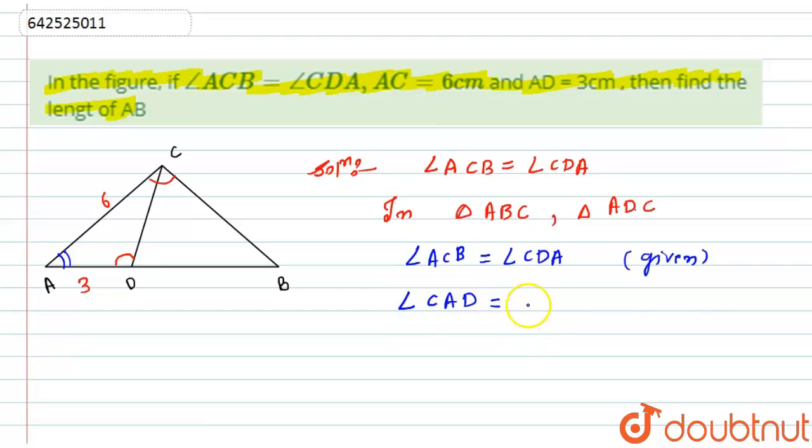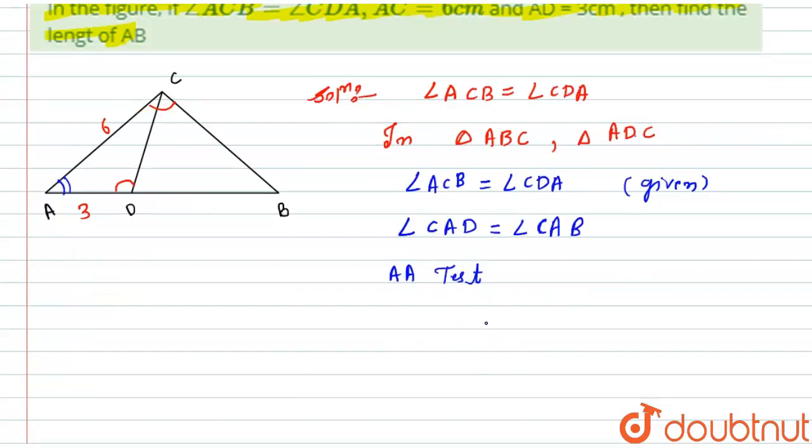Hence it is proved that by the angle-angle similarity test, the given triangle that is triangle ABC is similar to triangle ADC.